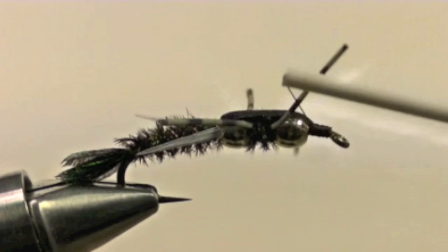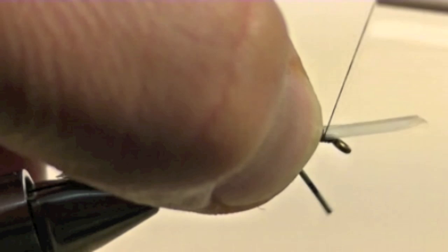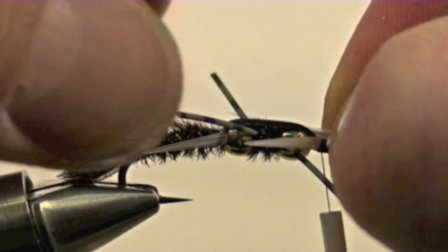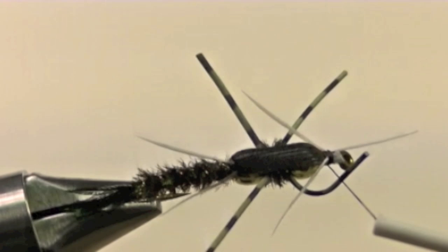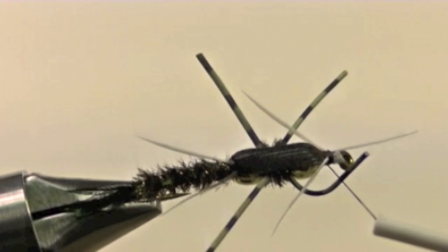Next we will add two more strands of white goose biots, one on each side angling toward the back of the fly. Clip off the tag ends. Build up the head a little bit with some thread wraps and now it is time to whip finish.